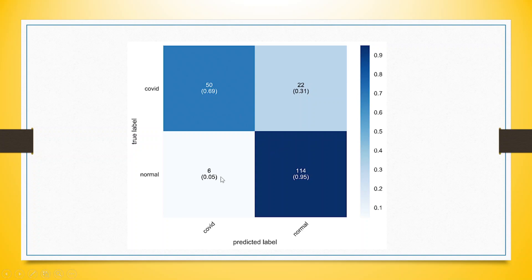But let's talk about the misclassified cases. A person was normal and the kit detected that a person is having COVID — 6 such cases. Similarly, a person was having COVID and the kit detected the person as normal — 22 such misclassified cases. So in total 22 plus 6, that is 28, are misclassified cases, also known as leakage in the model.